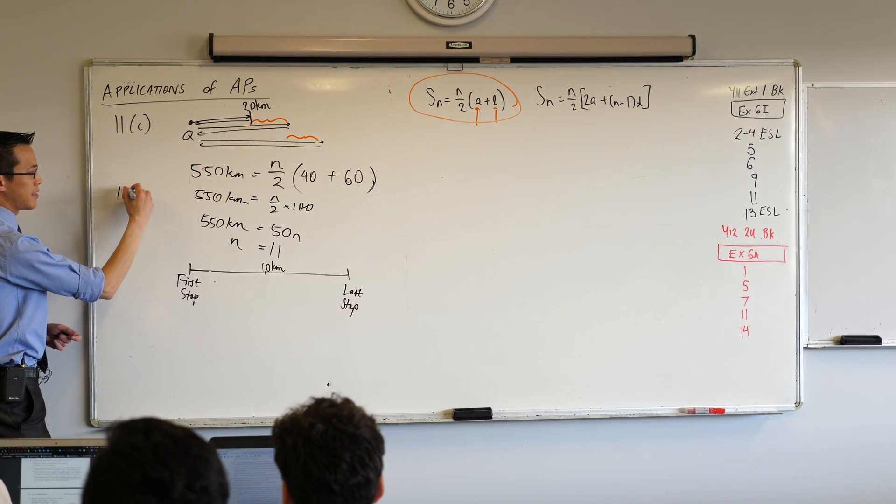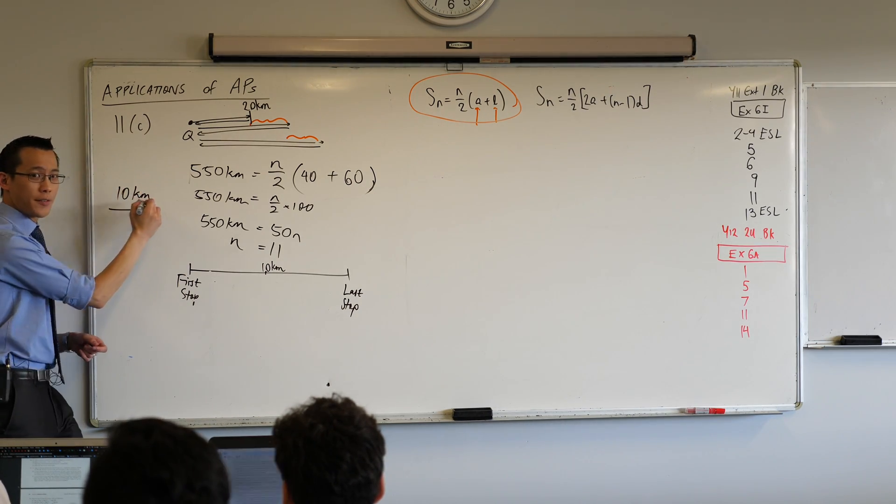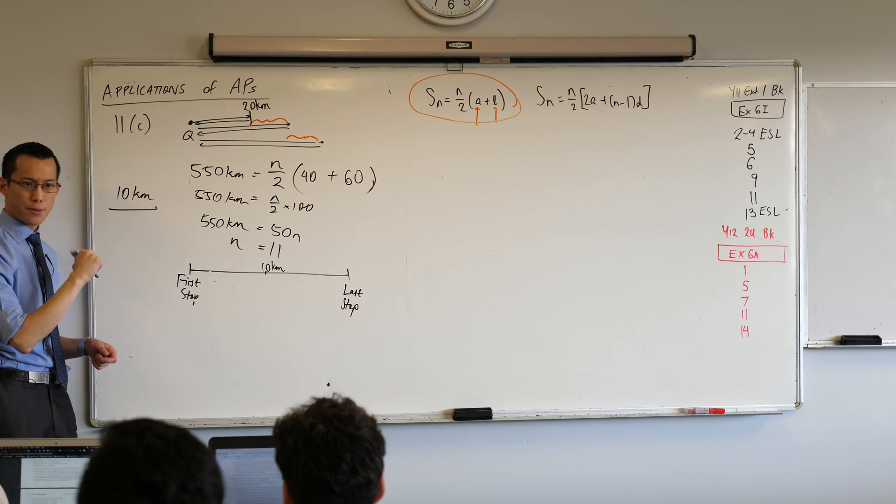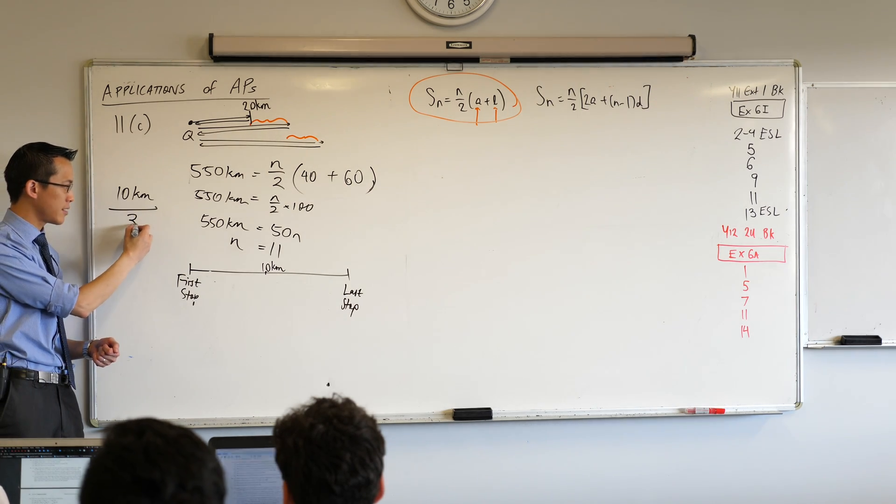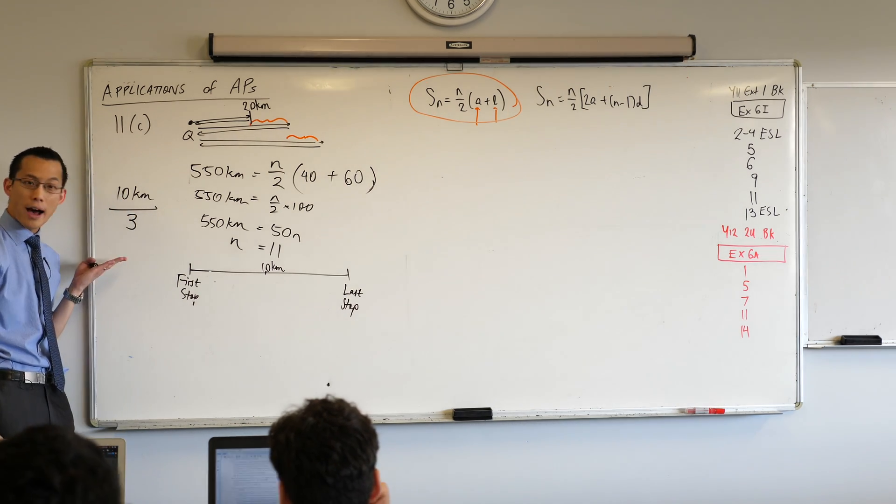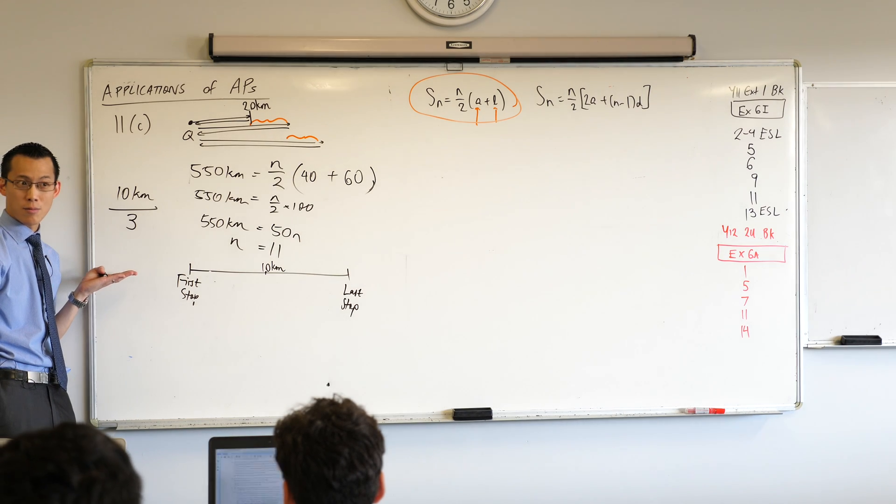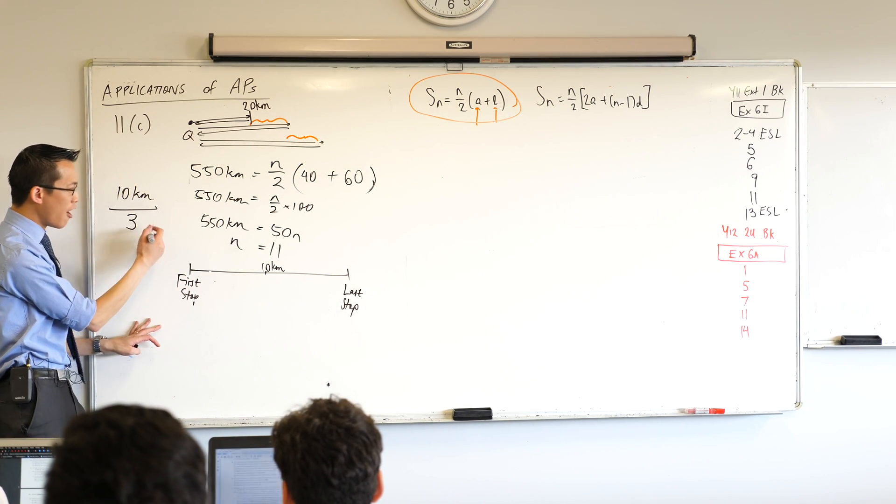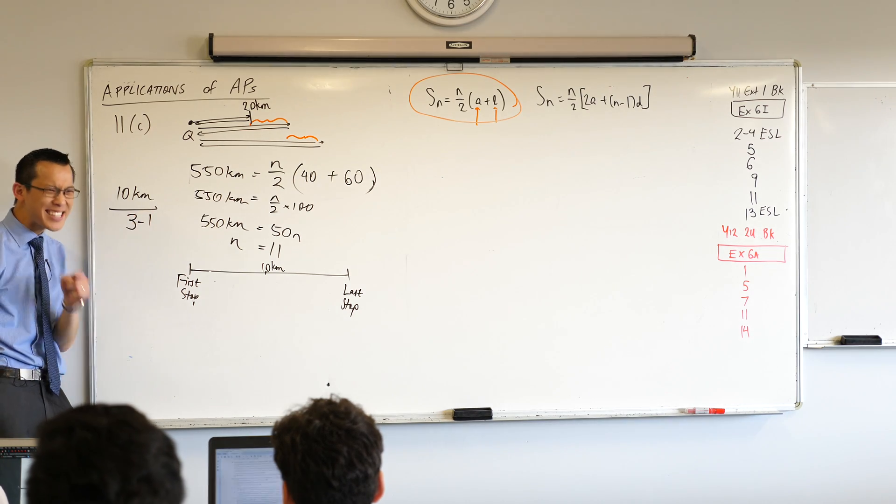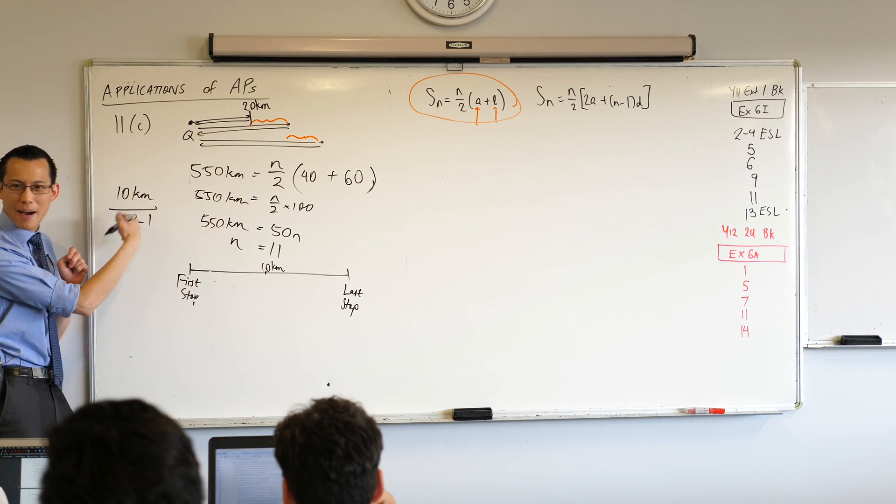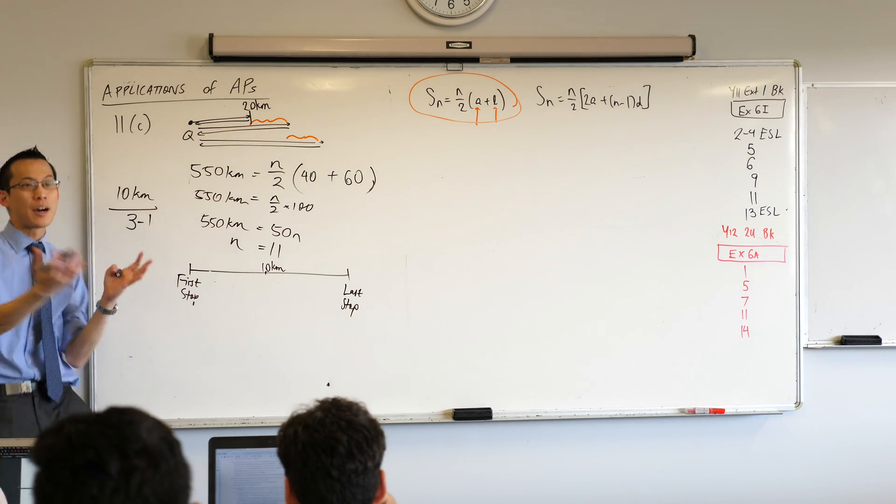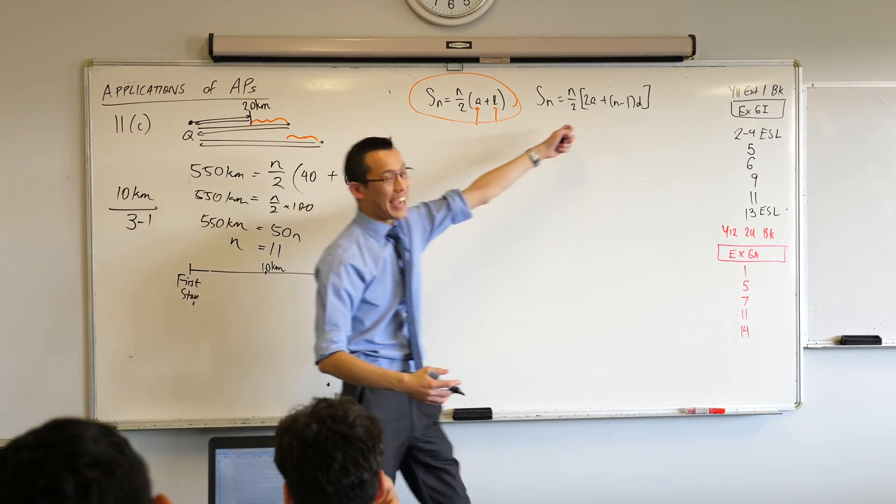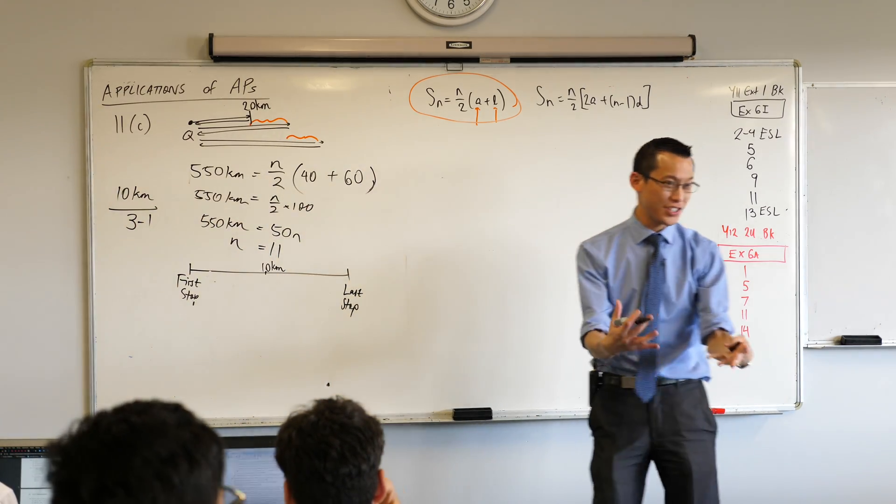But hold on a second. Three stops. A lot of you are taking this number, 10 kilometres, and you're dividing by the number of stops there are. But that does not give you 5, does it? Right? So what's going on? We're off by 1, in fact. Does that sound familiar? Where does this off by 1 come from? It comes from the N minus 1, in here, right? So how do we actually fix this?